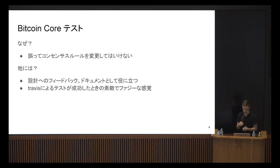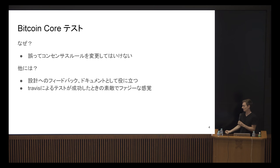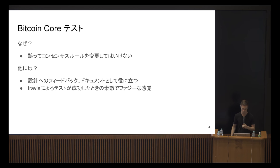A bit about testing. I'm not going to explain testing in general, but for Bitcoin Core the most important reason in my opinion is that we need a harness to check that consensus rules do not change accidentally. Other advantages include the design feedback loop — when you write a new feature it gives you some feedback or a hint on how to document it, and then finally the nice warm fuzzy feeling when Travis is green. Travis is the continuous integration we use on the GitHub project.